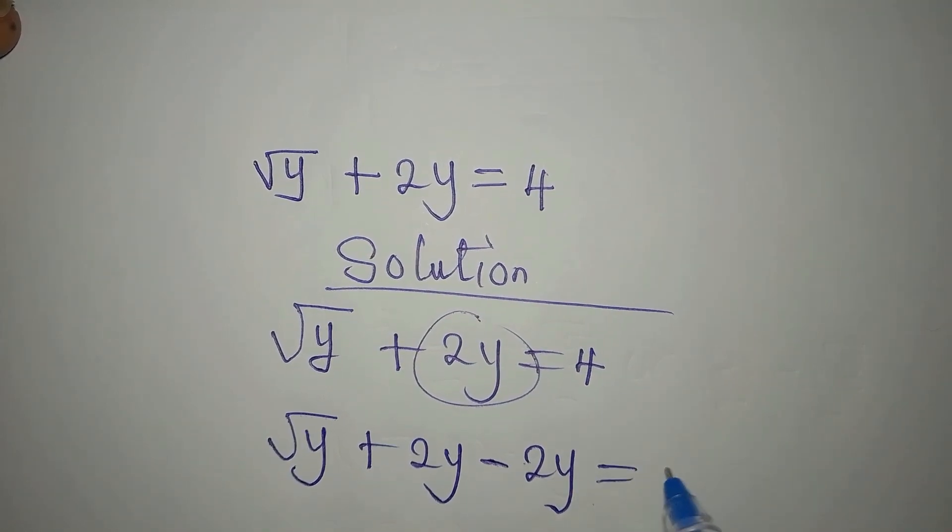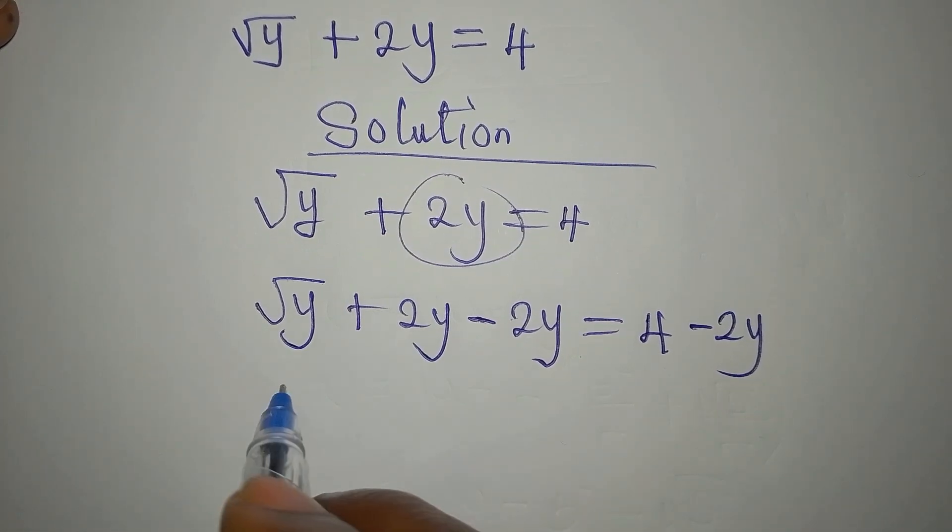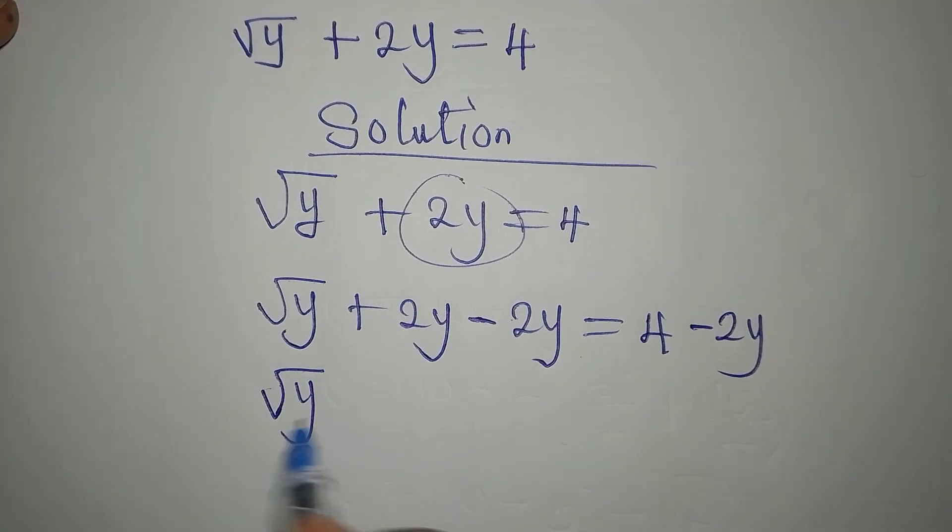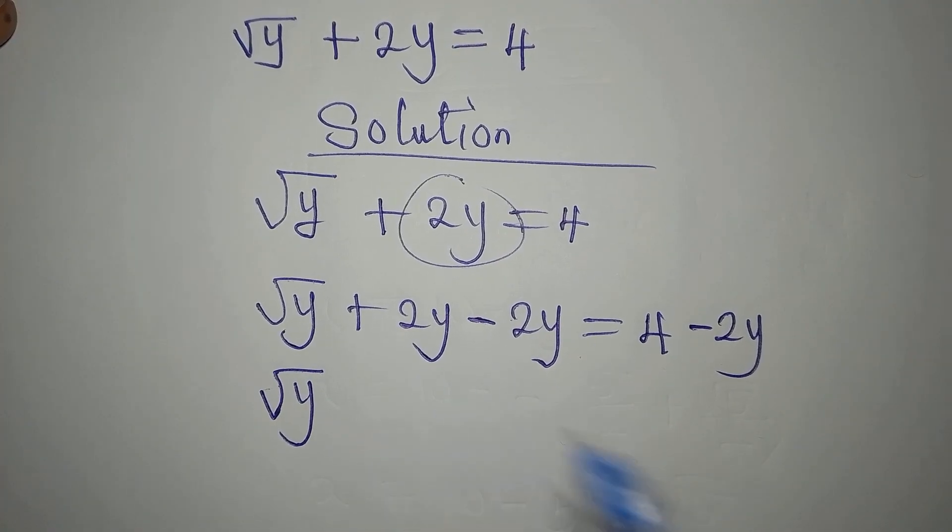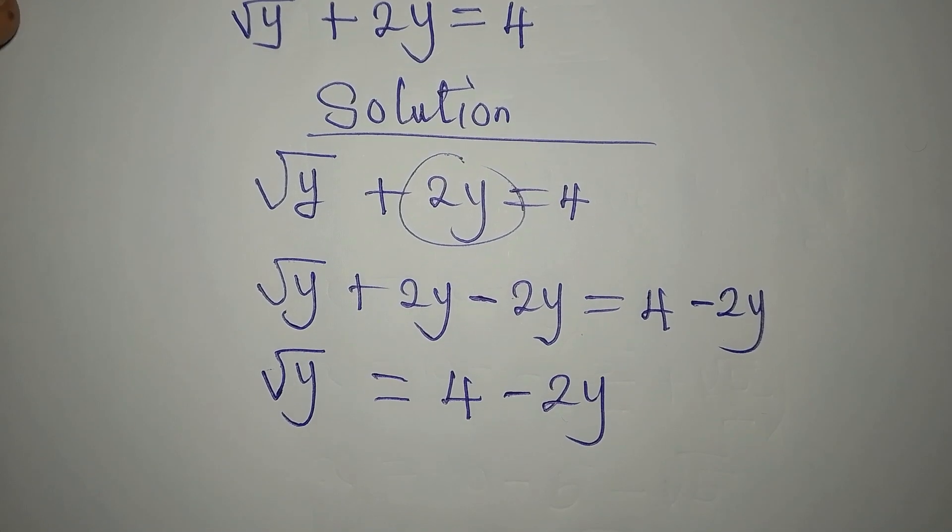Then on the other hand we have 4, then minus 2y. So if we go ahead now we're going to have root y, 2y minus 2y is gone, so this is equal to 4 minus 2y.